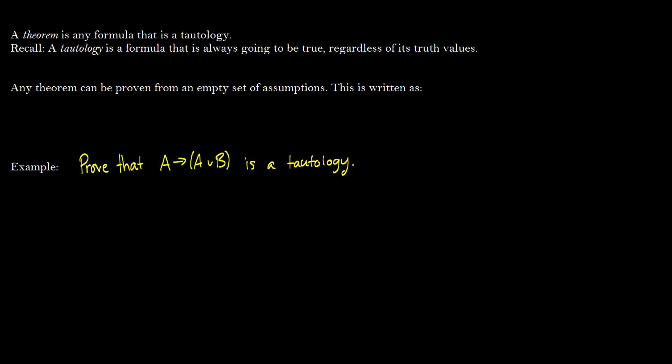So we're going to talk about a theorem first. A theorem is any formula that is a tautology. If you remember, a tautology is a formula that's always true. No matter what inputs you give it for its truth values, it's always going to come out true. And we can prove any theorem from an empty set of assumptions. Normally we say that a set of sentences proves some formula alpha, but in the case of a theorem, we don't need anything to prove the theorem. This is just a turnstile alpha. Some people will write a null set here. This is the exact same thing.